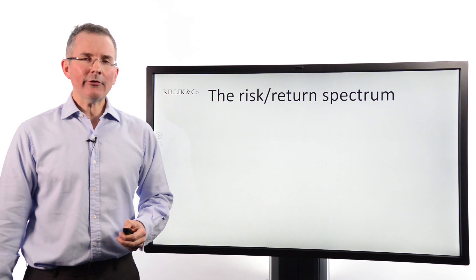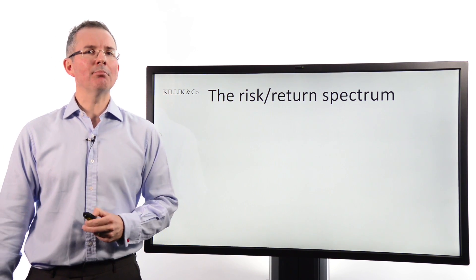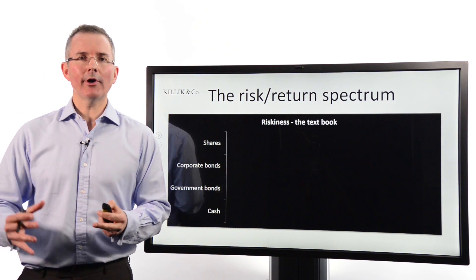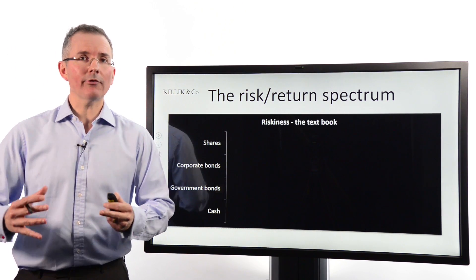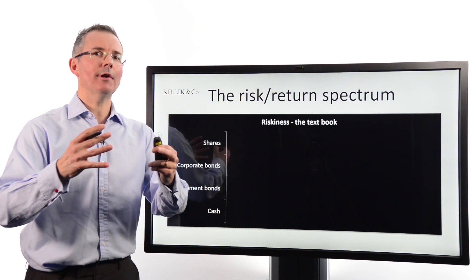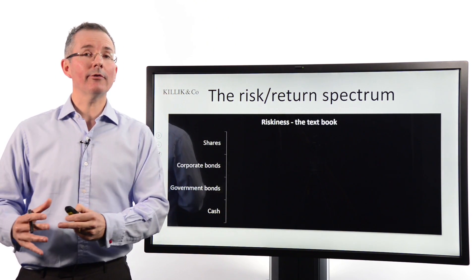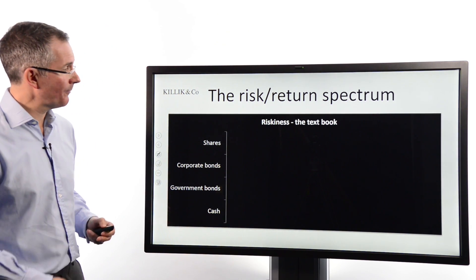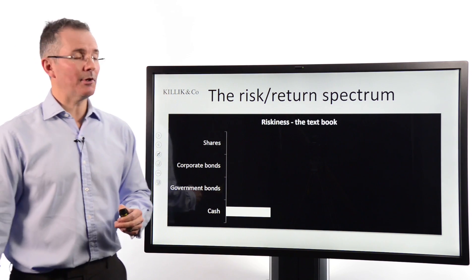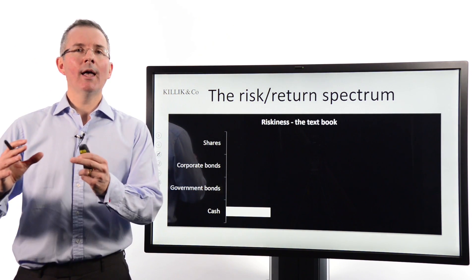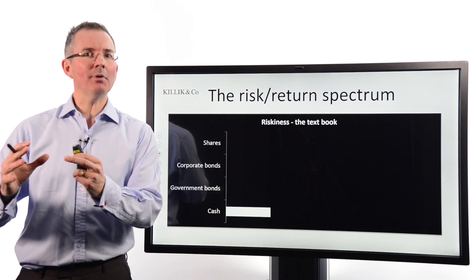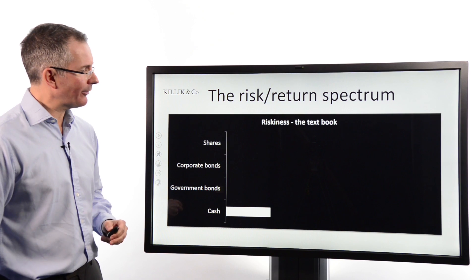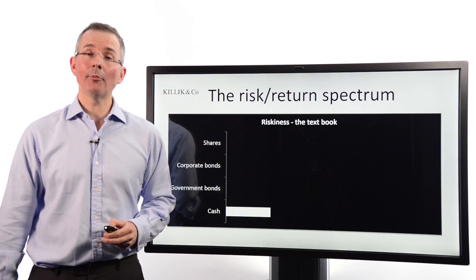Where do fixed income securities sit on the risk-return spectrum? According to textbooks, there's a trade-off between risk and return: in financial markets, the more risk you take, the higher the return you should expect — and equally, you shouldn't expect higher returns without taking some risk. No free lunches, after all. Cash tends to sit at the bottom of the spectrum with low returns. It's generally seen as more price-stable than shares, but beware the inflation impact on cash — it isn't truly risk-free.